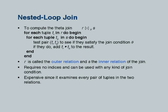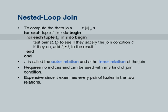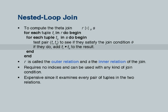Nested loops join is a very simple thing. If I want to join R and S on whatever condition, the nested loops join runs as follows: it takes each tuple T_R in R, then for each tuple T_S in S. It is a nested pair of loops. It matches every tuple in R with every tuple in S and for that pair of tuples it sees if they satisfy the join condition. If so, add the pair of tuples and do whatever projection is required and put it in the output. That is the core idea of nested loops — very simple.